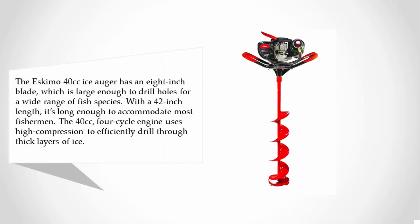Halfway through our list at number three, the Eskimo 40cc Ice Auger has an eight-inch blade, which is large enough to drill holes for a wide range of fish species. With a 42-inch length, it's long enough to accommodate most fishermen.